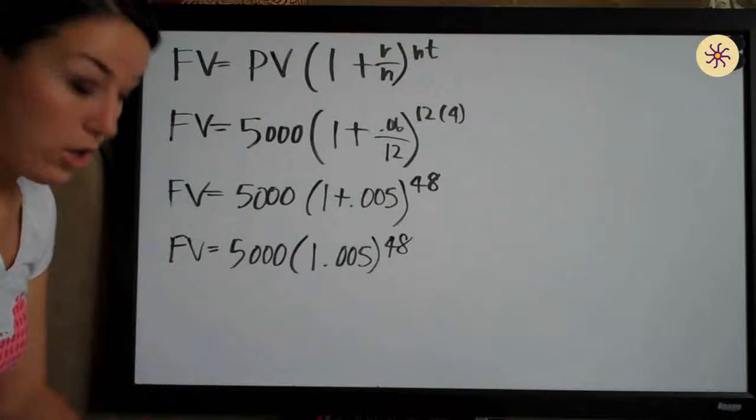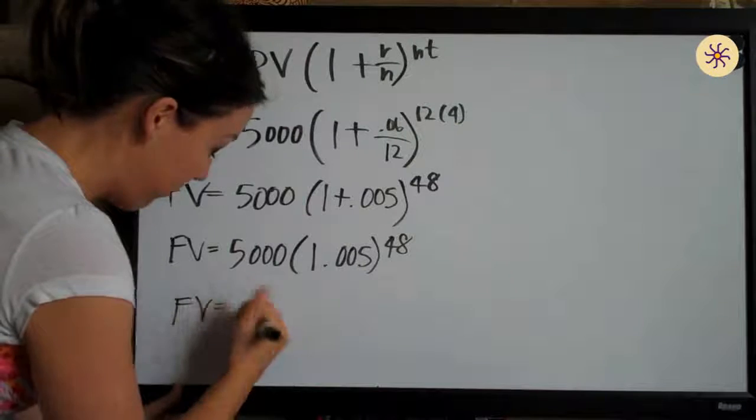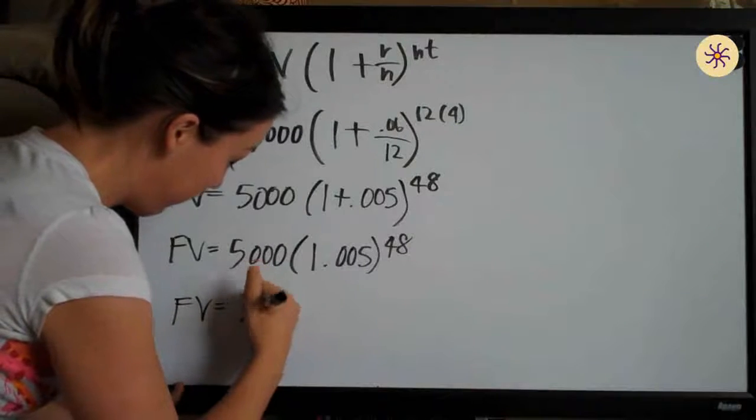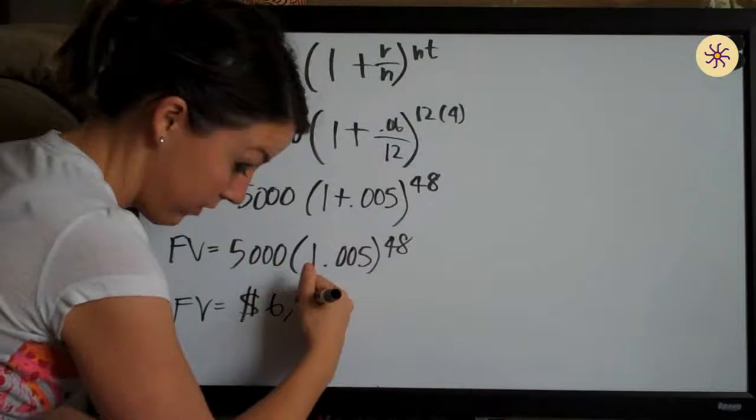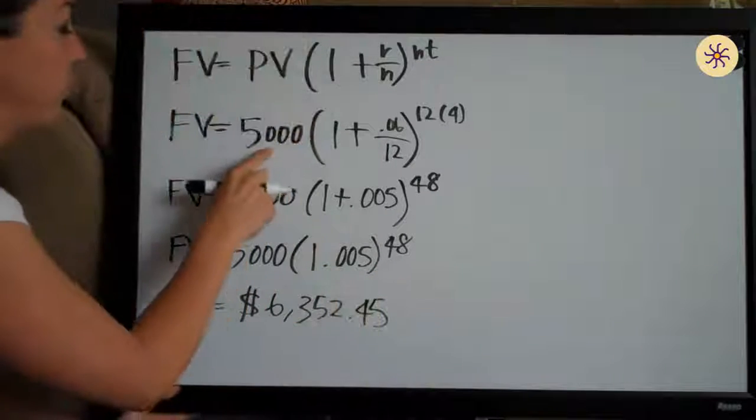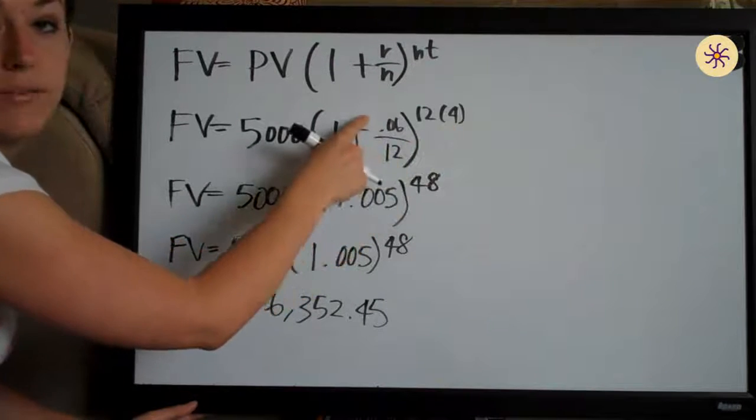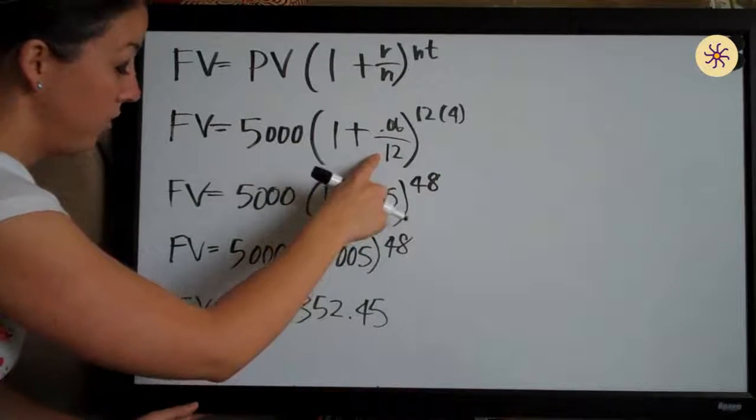So once you get here, you plug these values into your calculator and the future value ends up being $6,352.45. So that's the future value of $5,000 after four years at a rate of 6% with interest compounded monthly.